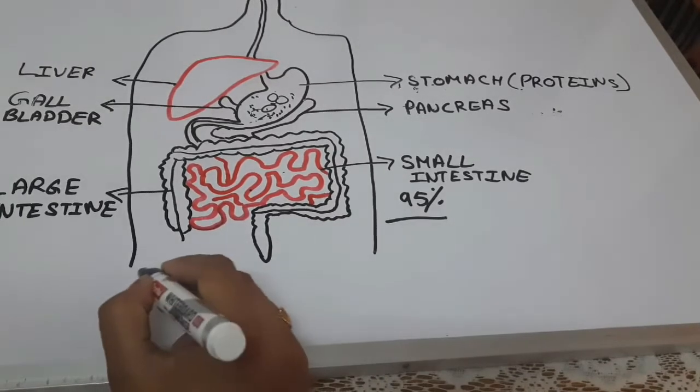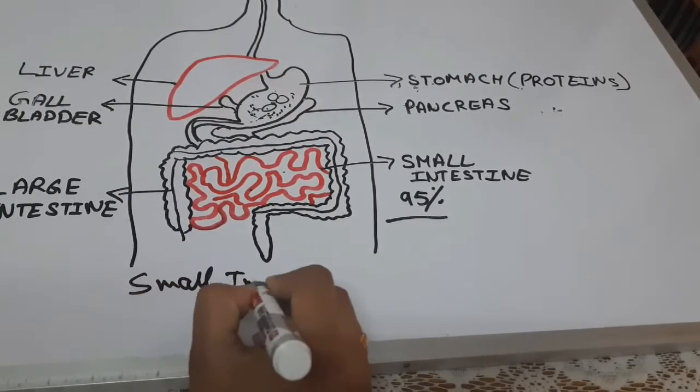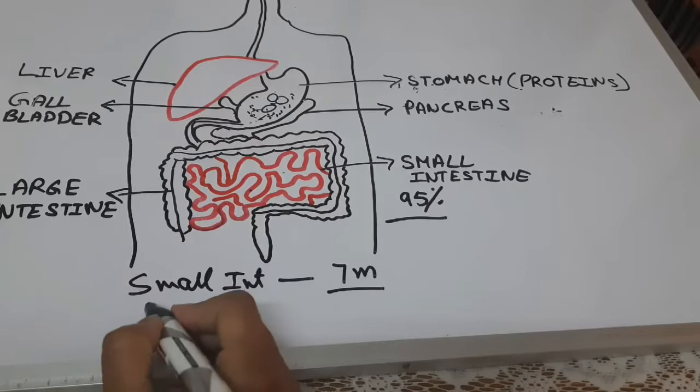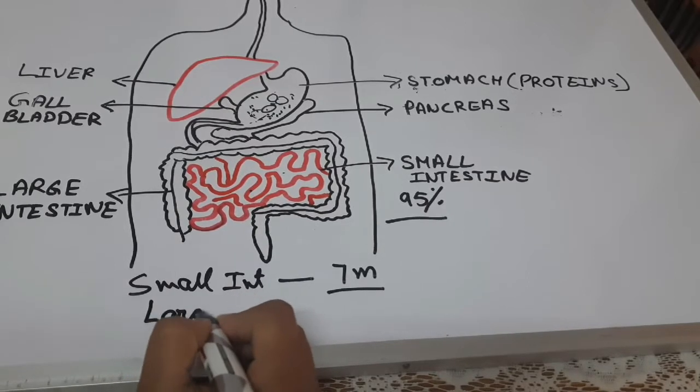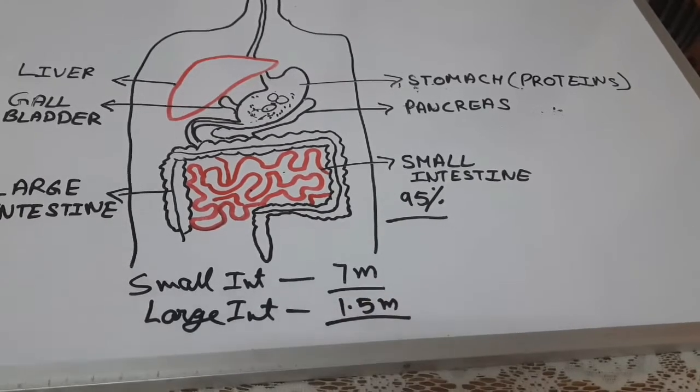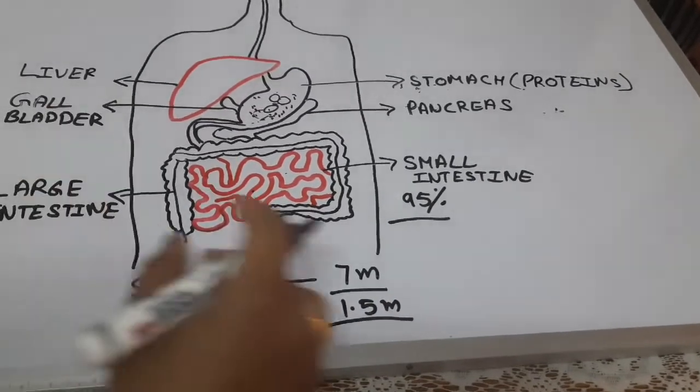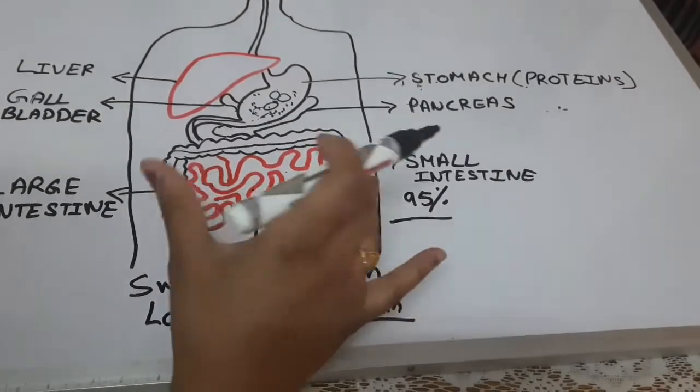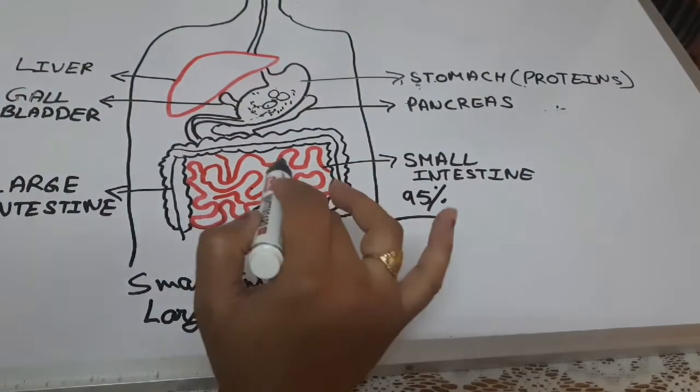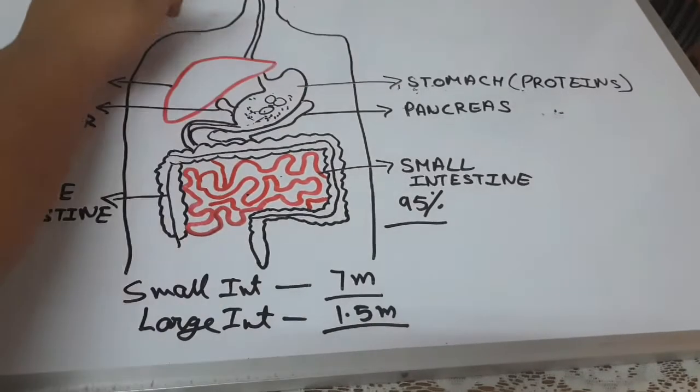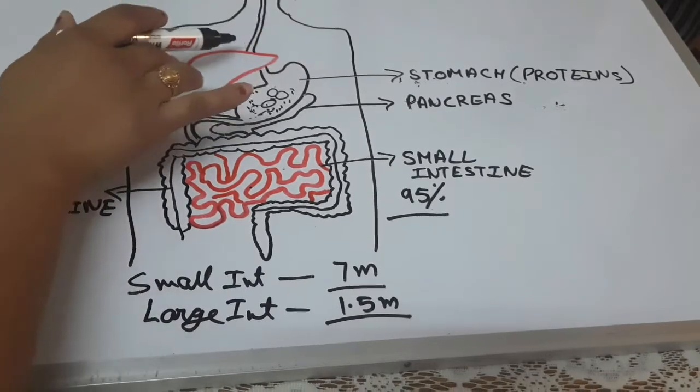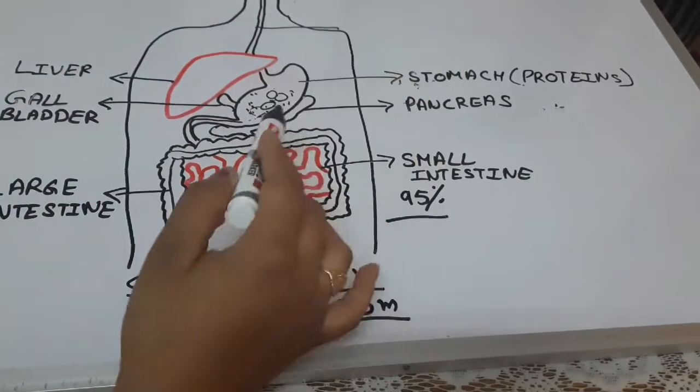The length of the small intestine is around 7 meters, whereas the length of the large intestine is 1.5 meters only. So don't go by the name small intestine, because it is arranged in compact form. This is the small intestine. The process of digestion starts in our mouth.